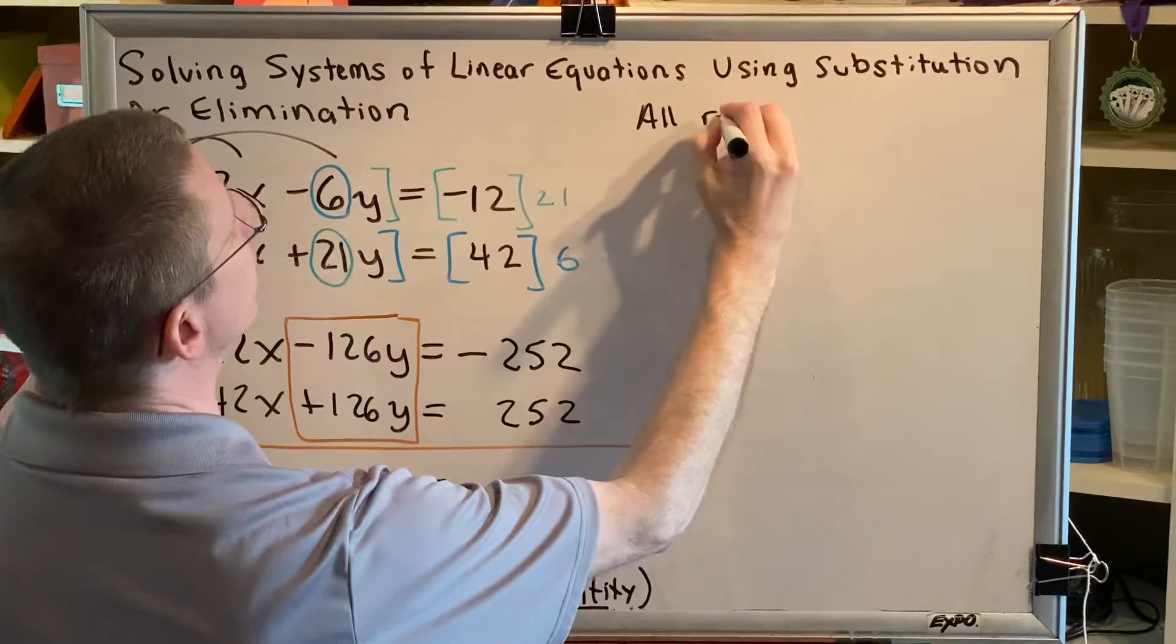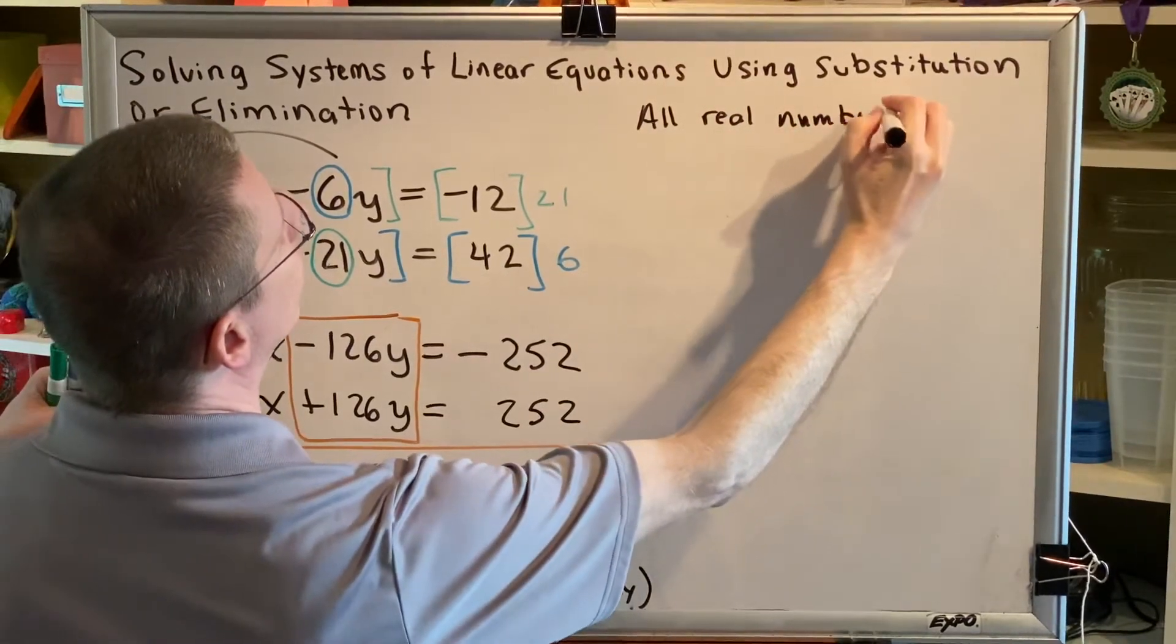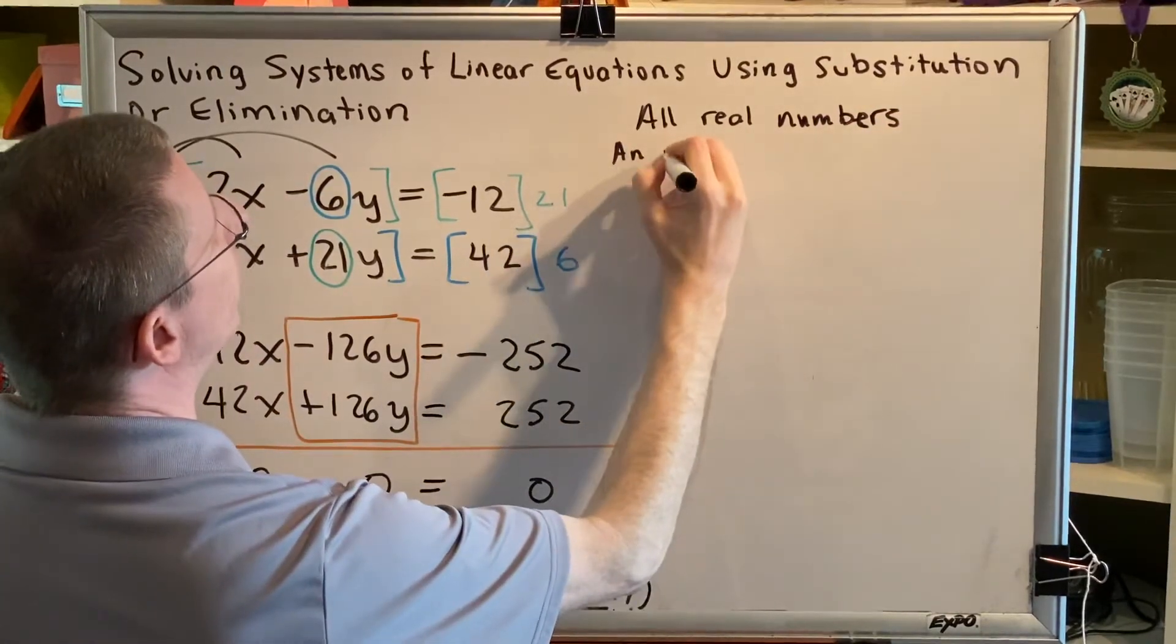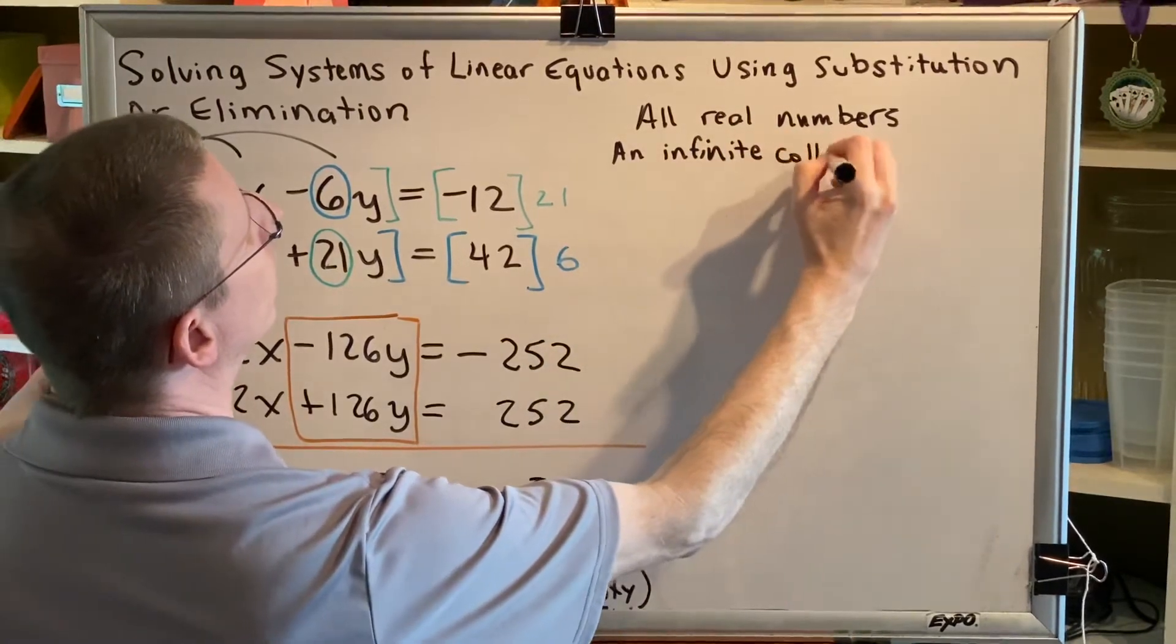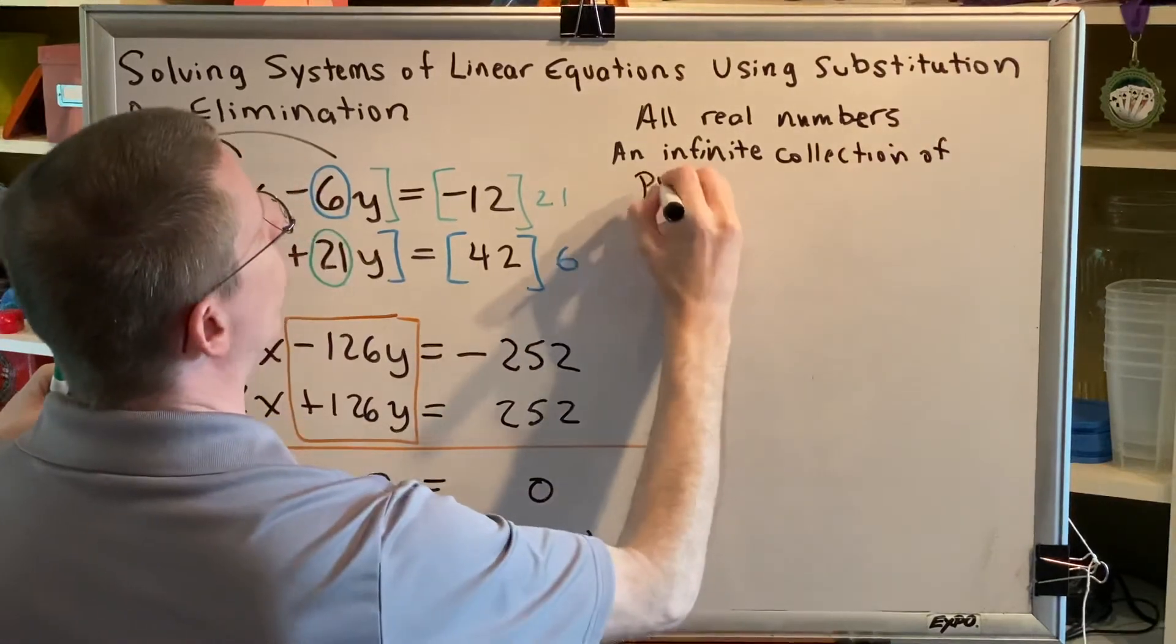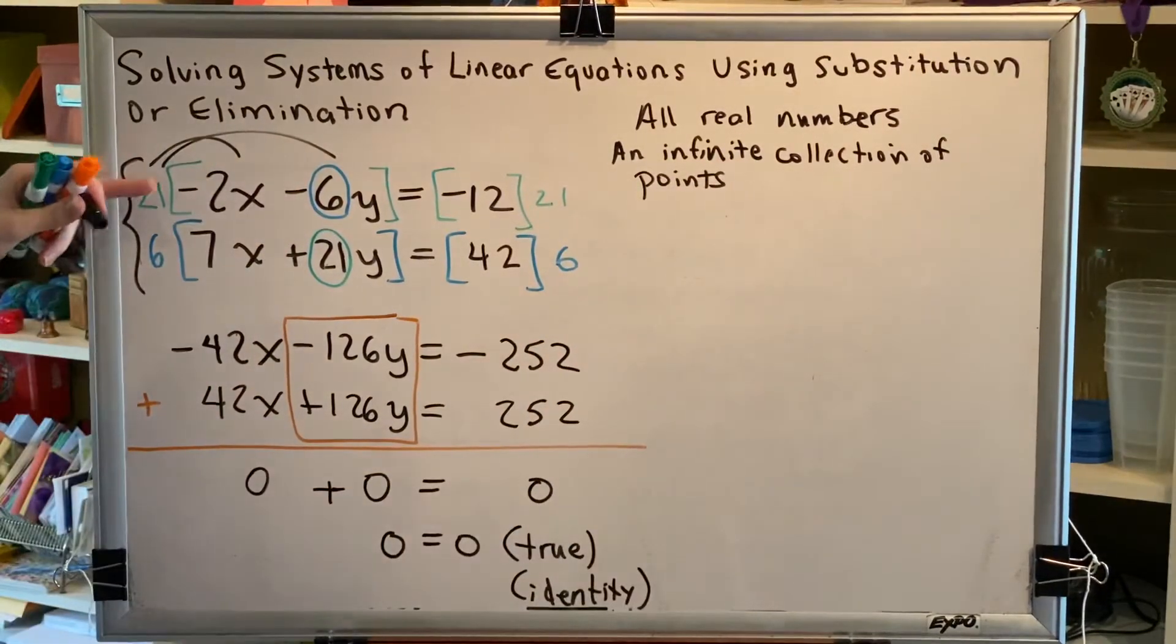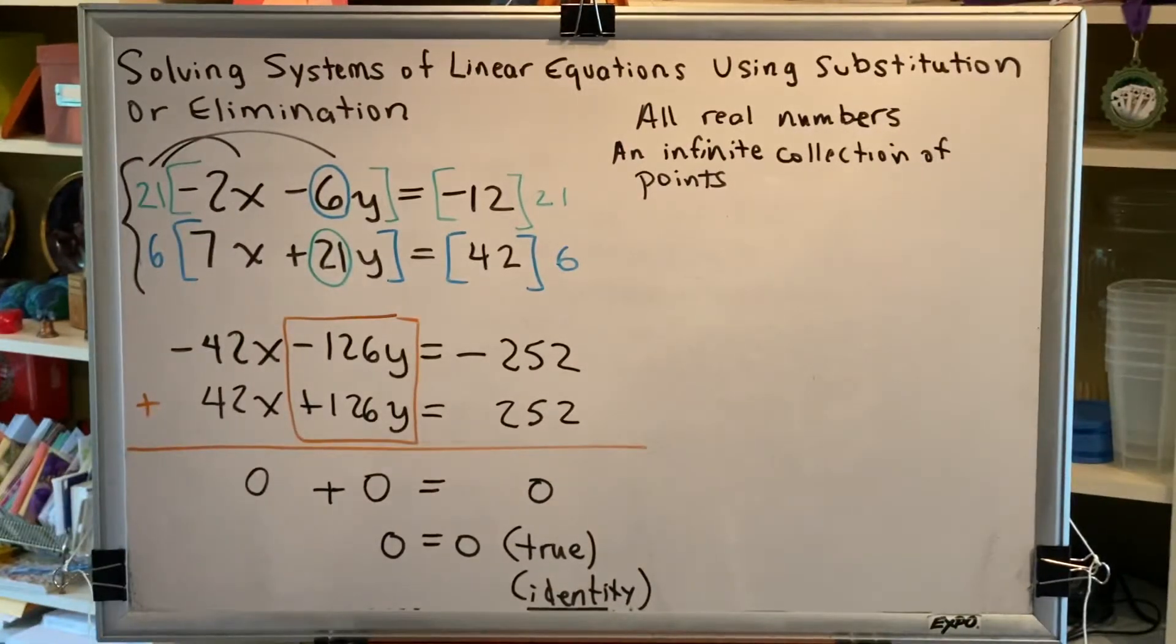All real numbers is a shorthand way of writing that, but the more sophisticated way would be to say an infinite collection of points. But not just any old points, points that happen to be on this line or this one, because when you graph them you'll find that they are the same line.